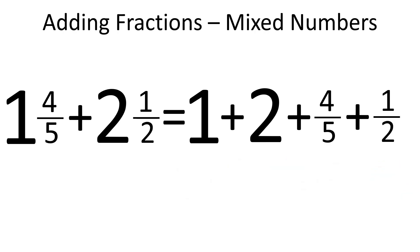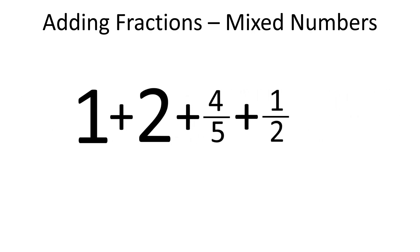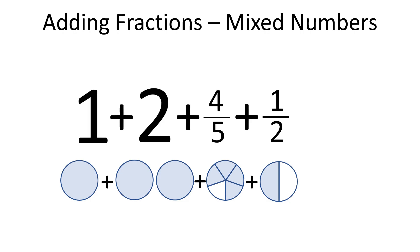In our example, we would add 1 and 2 together first, and then 4 fifths and 1 half. So 1 plus 2 is 3. This way we have 3 plus 4 fifths plus 1 half.